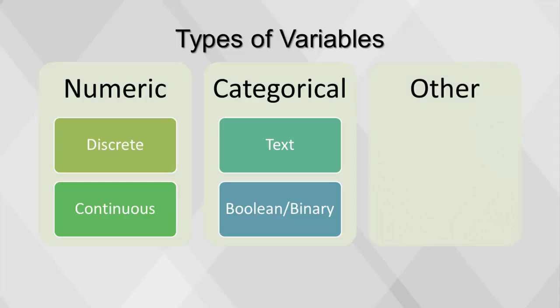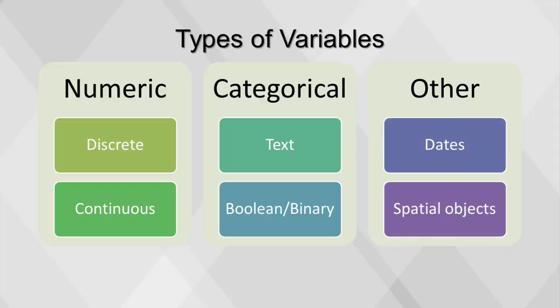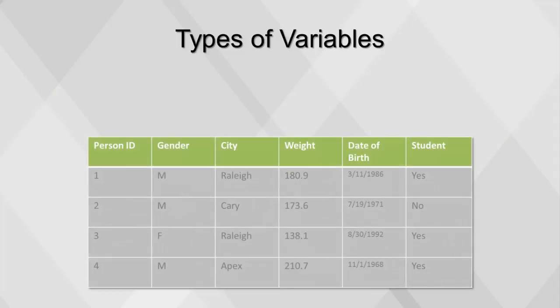Variables that can be treated as either numeric or categorical include dates, such as date-time, date, or time, and spatial objects, which show location such as latitude and longitude. Here are the variable types for our table.